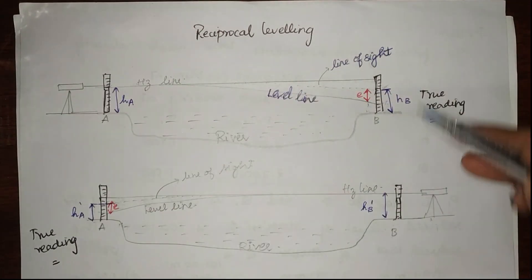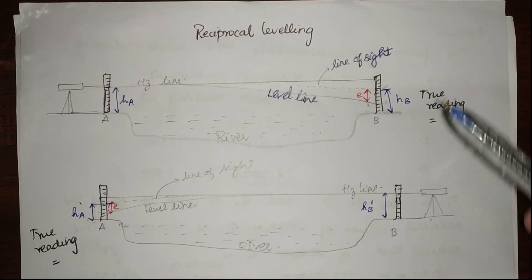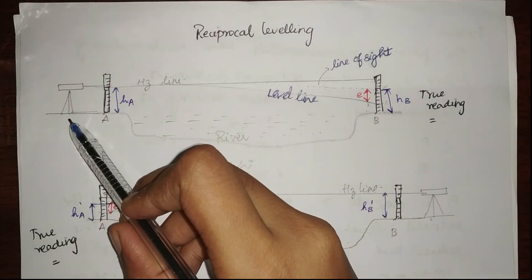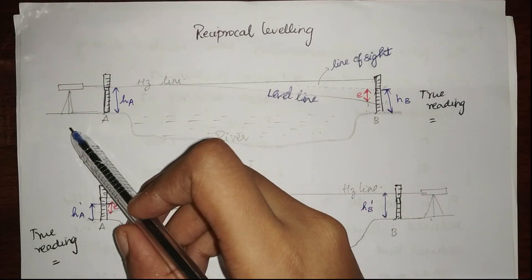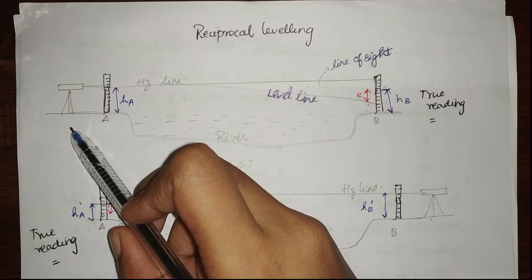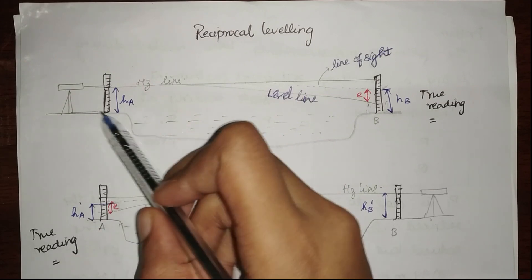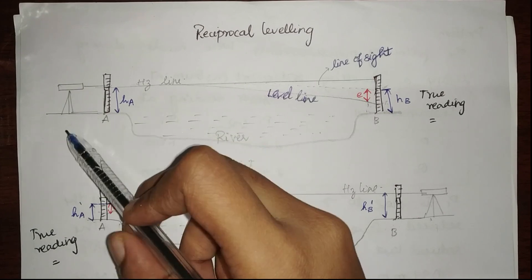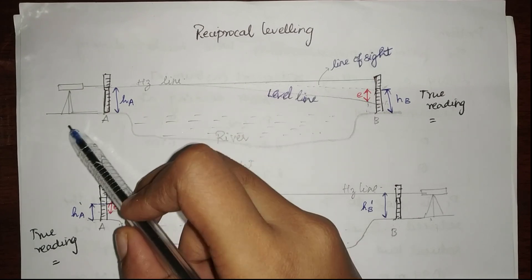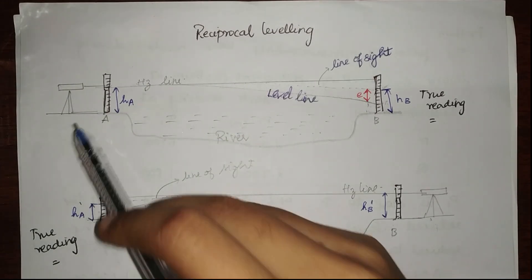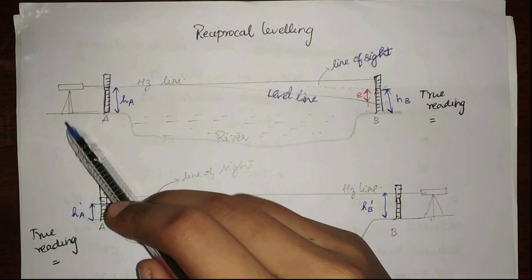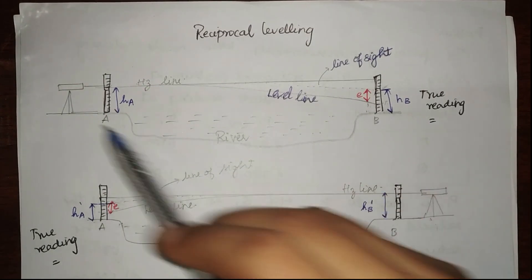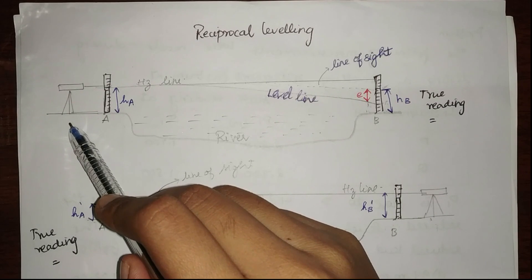I have already set up my leveling staff there. First, what I'm going to do is set up my auto level or dumpy level — my leveling instrument — very near to the station which I already know. I already know the RL of A, so I'm setting up my level very close to it.